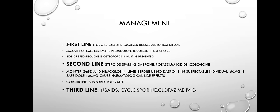Management: there are three types. First-line management — for mild or localized disease, use topical steroids. For the majority of systemic cases, prednisolone is the common first-line treatment; a side effect is osteoporosis, which must be prevented. Second-line treatment includes steroid-sparing agents: dapsone, potassium iodide, and colchicine. Monitor G6PD and hemoglobin levels before using dapsone. In susceptible individuals, 50 mg is a safe dose, while 100 mg can cause hematological side effects.